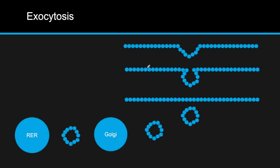For material leaving the cell, an example is proteins exiting. The protein is made in the rough ER, packaged inside a membrane, sent to the Golgi body where it is processed, and then transported to the cell membrane. The membrane around the protein rejoins with the cell membrane and the protein is released outside the cell.